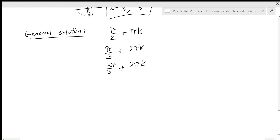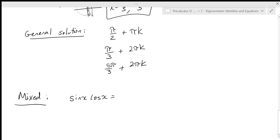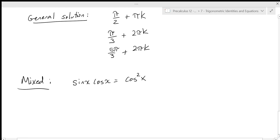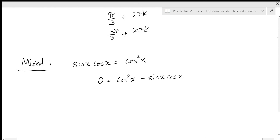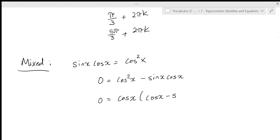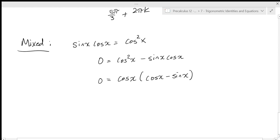Now, how does trig make this more complicated? Sometimes you have a mixed quadratic that doesn't fully factor cleanly. Let's say we have sine x times cos x equals cosine squared x. We've got both a sine and a cosine and can't simply eliminate one. So get everything on one side: zero equals cosine squared x minus sine x cosine x.